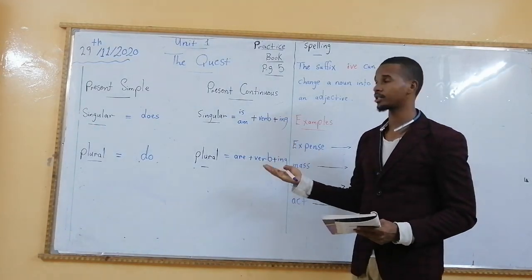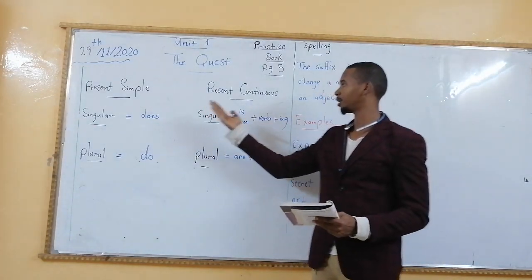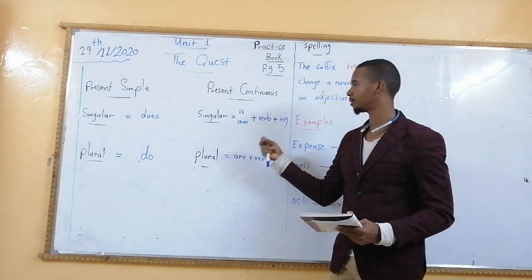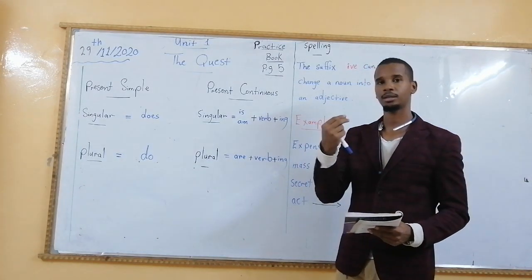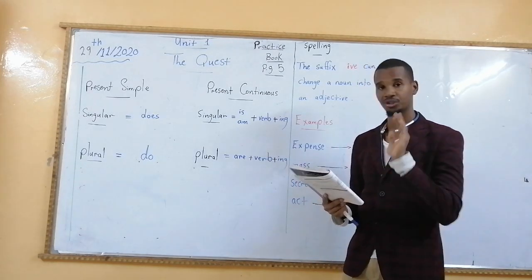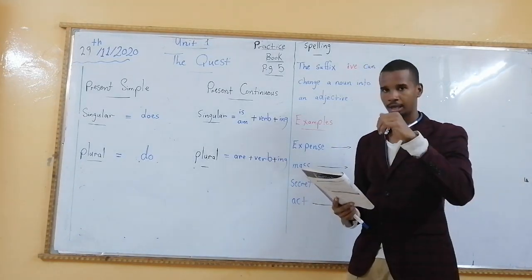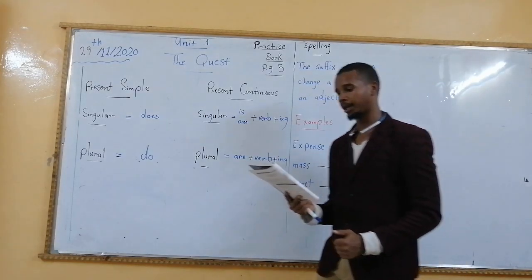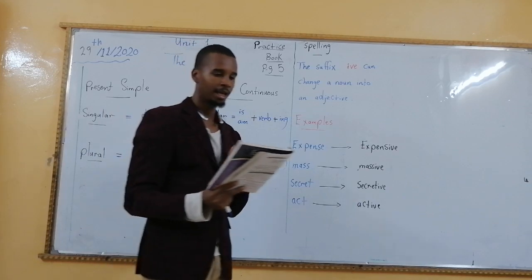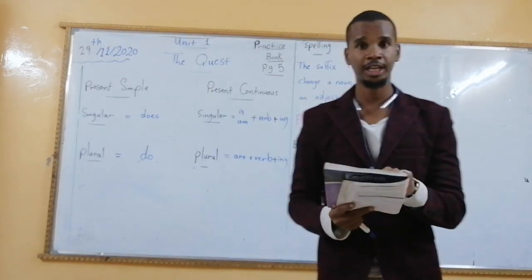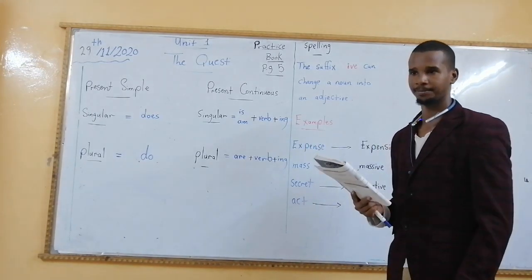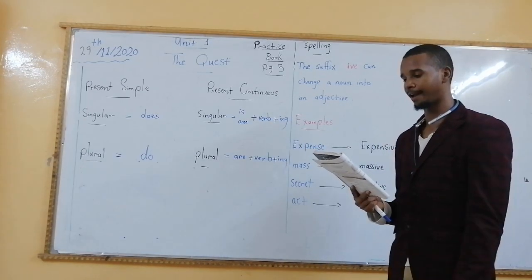I hope your memories are now refreshed with the present simple and the present continuous rules. These are just some notes and some tips, because you need your memories to be refreshed before we move to the exercise on page five in the practice book. Let's begin. Dane and Lek. The first one has been done for you as an example. Dane and Lek go fishing every day.